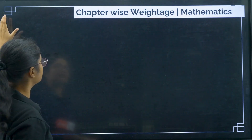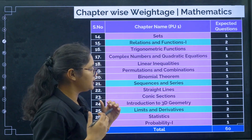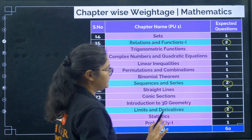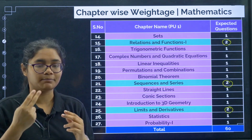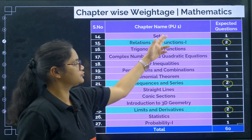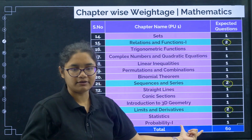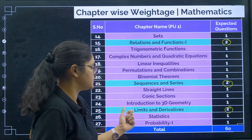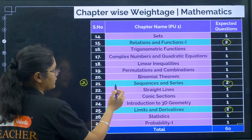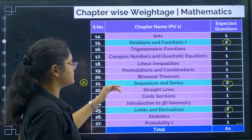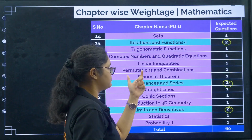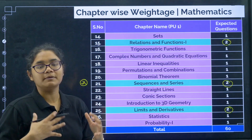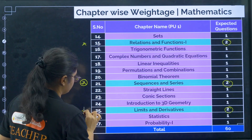For maths PU1 weightage: Relations and Functions can have 2 questions, as can Sequence and Series and Limits and Derivatives. Since you already have Relations and Functions Part 2 in PU2, doing that completely helps you score these PU1 questions too. Similarly, having done Probability 2 helps you solve Probability 1 questions. Limits and Derivatives follows from your derivatives and integration work. Sequence and Series is not related to PU2, so focus there. Other chapters like Trigonometric Functions, Complex Numbers, Inequalities, Permutation and Combination, Straight Lines, and Conic Sections each carry 1 mark.